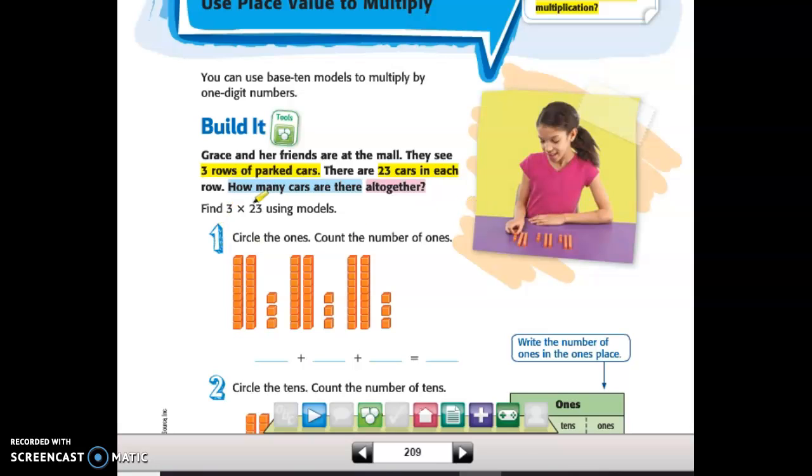And so we're going to use models. First step it has us doing is circling the ones place. So we're going to circle the ones and count the number of ones. And my cat is deciding to make a lot of noise during the video. So we've got three ones.